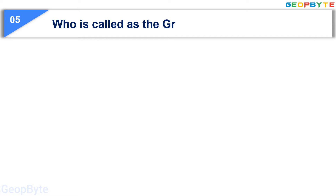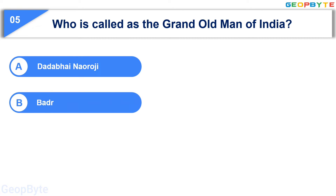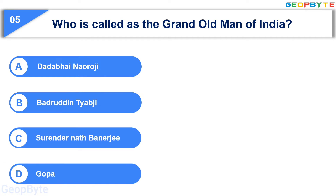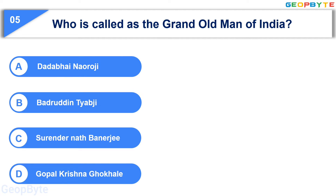Moving to the fifth question: who is called the Grand Old Man of India? Option A: Dadabhai Naoroji, Option B: Badruddin Tyabji, Option C: Surendranath Banerjee, Option D: Gopal Krishna Gokhale. Your time starts now. Your time is up and the correct answer is Option A: Dadabhai Naoroji.